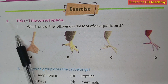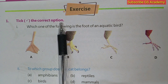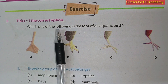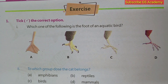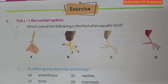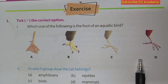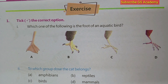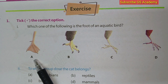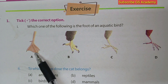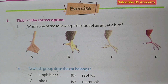The first question of the exercise is: take the correct option. Which one of the following is the foot of an aquatic bird? Aquatic comes from aqua, which means water. So A is the correct answer, because this foot is the foot of an aquatic bird or animal.